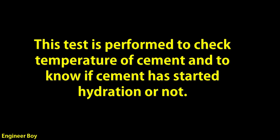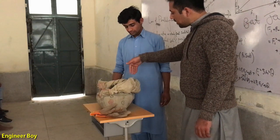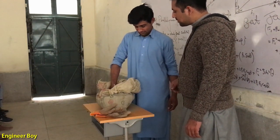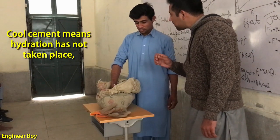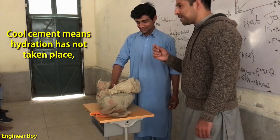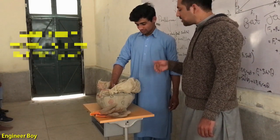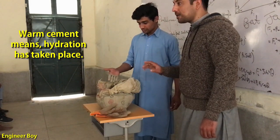Number six, and that's the cement temperature test. This can be the easiest way to check the quality of cement at the construction site. What you need to do is just place your clean dry hand inside the cement bag. If the cement feels cool, that means hydration has not taken place inside the bag. However, if it feels warm, that means hydration has taken place and the cement can be rejected.